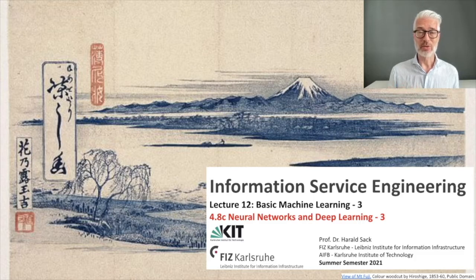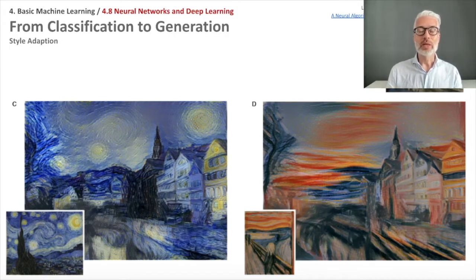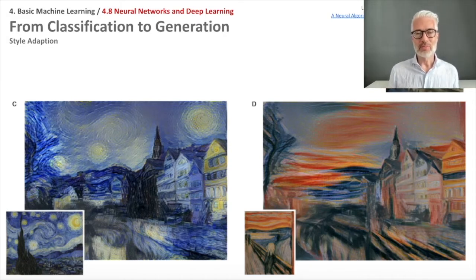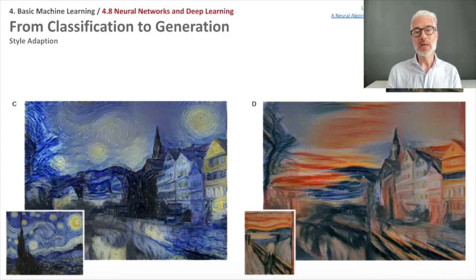These networks are nowadays also used for generation tasks. One of the earliest interesting generation tasks was style transfer. There is a famous paper from 2015 where networks were trained to adapt arbitrary photographs to the style of prominent artists. For example, you have a photograph and you can transfer the style of a Van Gogh painting or an Edvard Munch painting onto it.